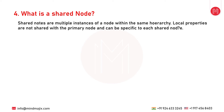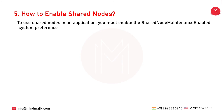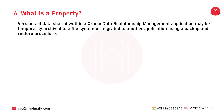The next question is: how do you enable shared nodes? To use shared nodes in an application, you must enable the Shared Node Maintenance Enabled system preference. For any hierarchy in which you want to share nodes, you must enable the Enable Shared Nodes hierarchy property. These settings are disabled by default.